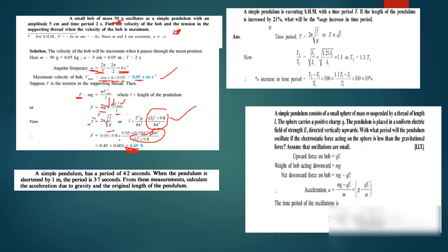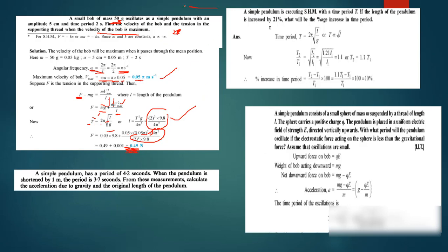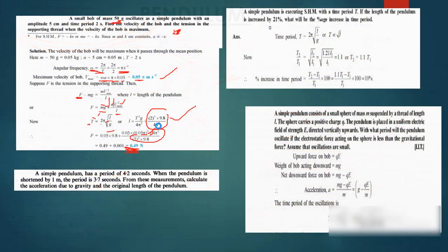Remember that cos θ is included. When the velocity of the bulb is maximum, that is at the mean point. At the mean point, the angle θ is 0, and cos 0 equals 1. So the cos θ term simply becomes 1 and is effectively removed from the formula. Just remember that.